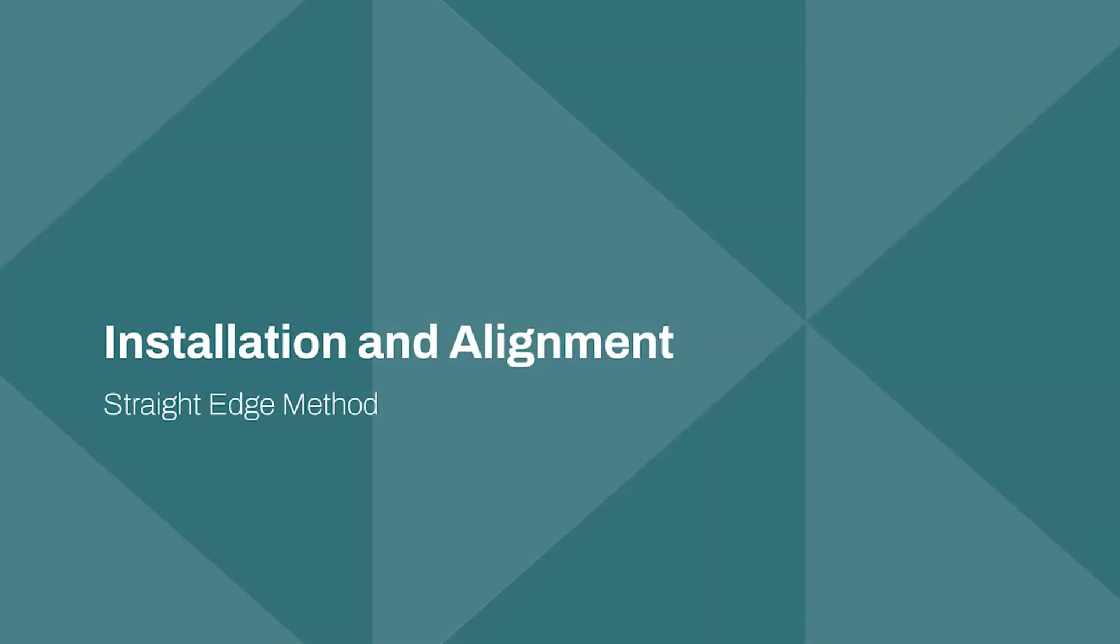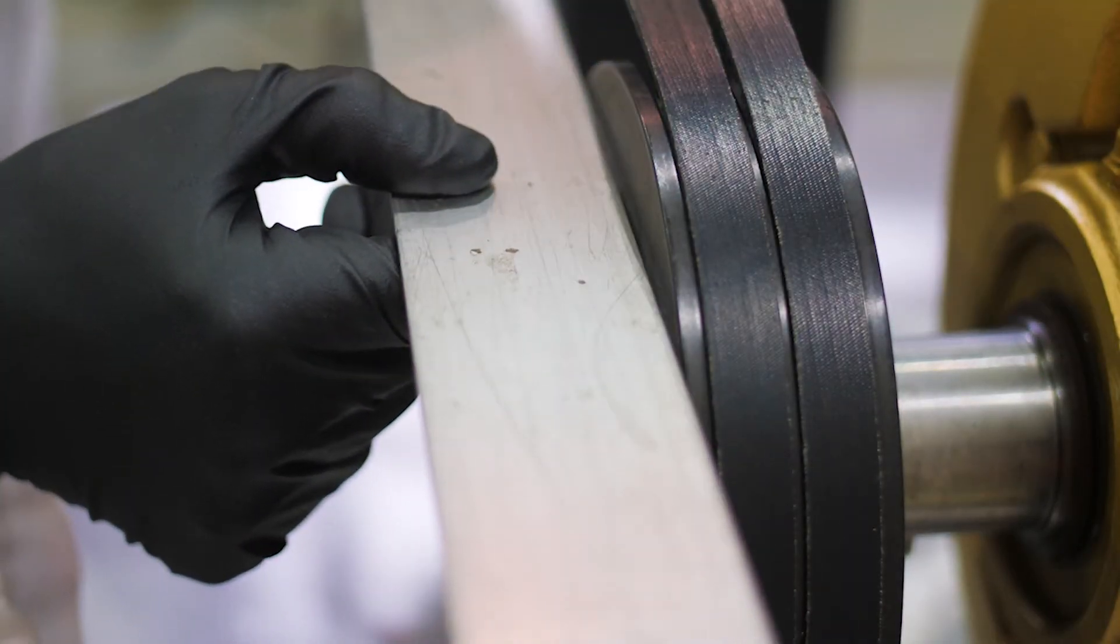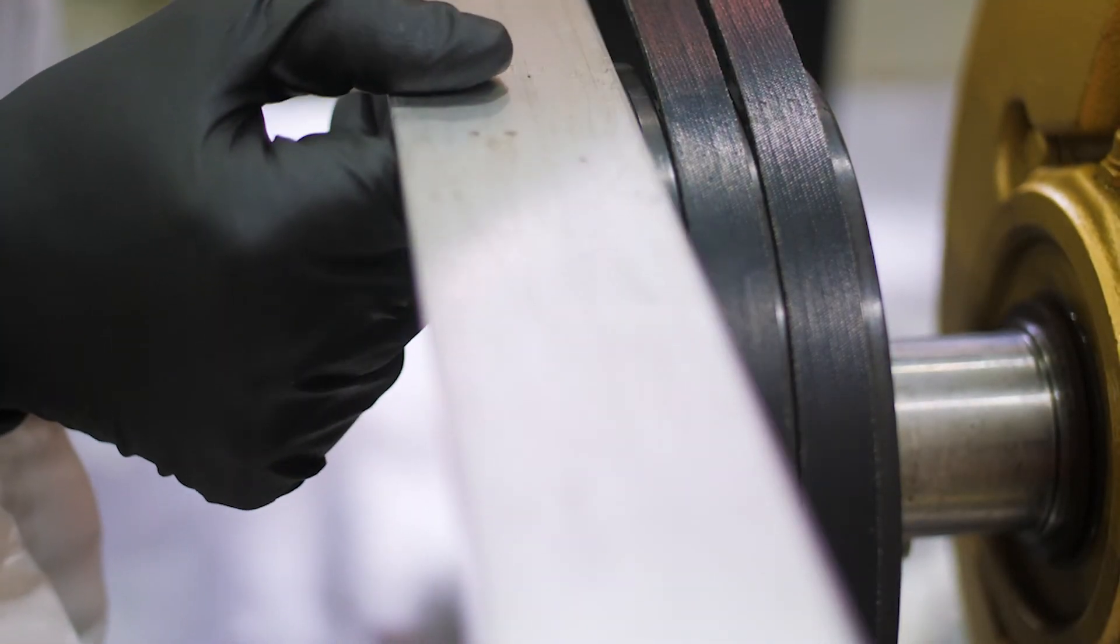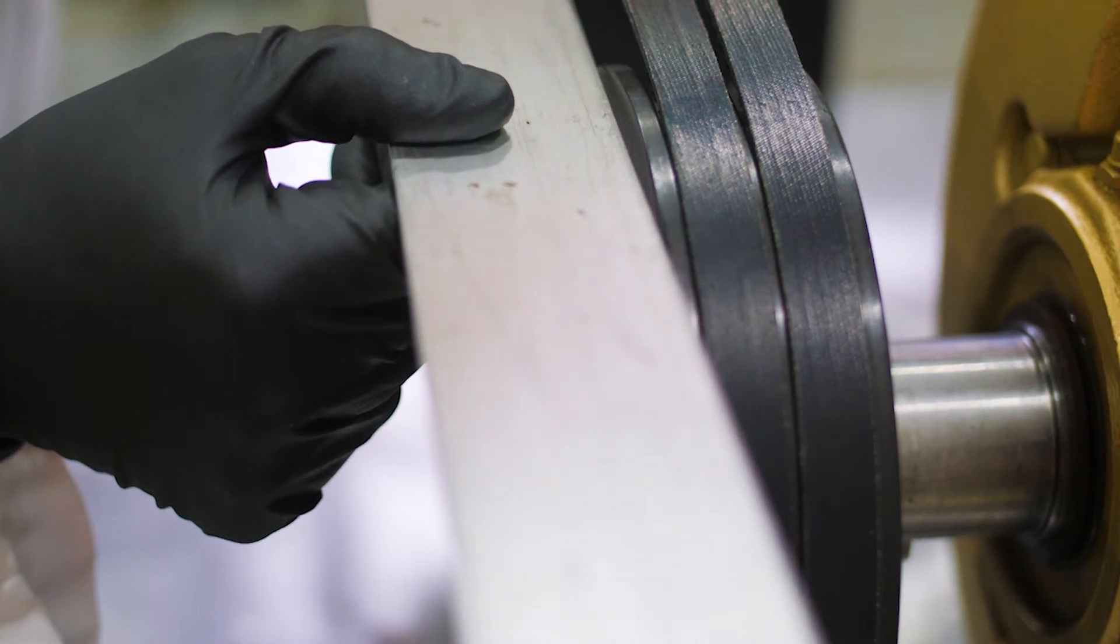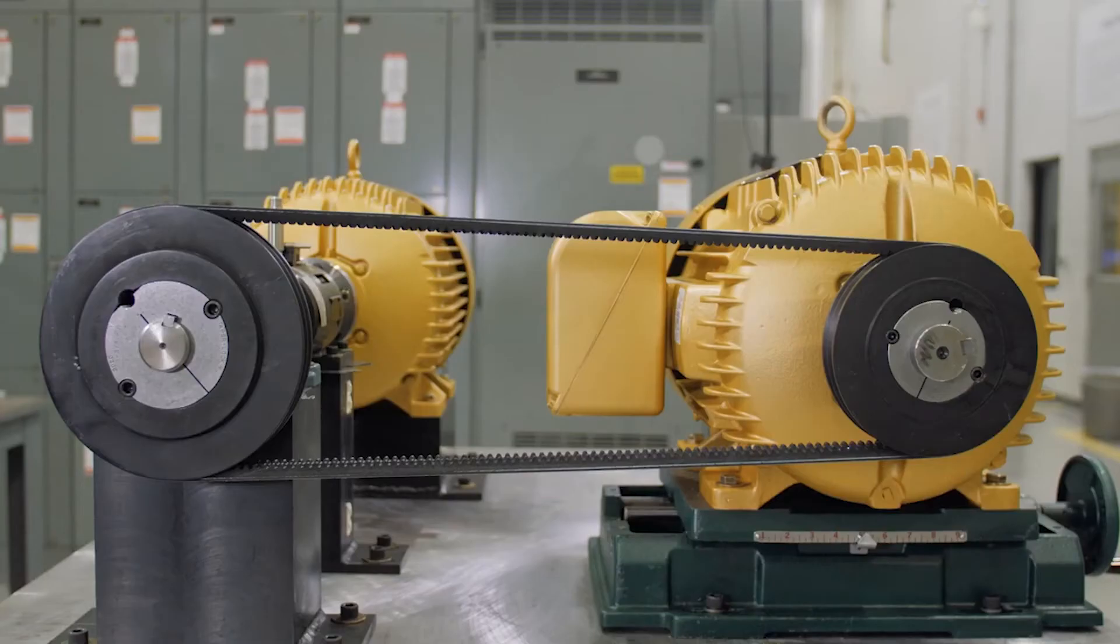Belt misalignment. First, we will align the belt drive using the straightedge method. There are two common types of misalignment, angular and parallel.